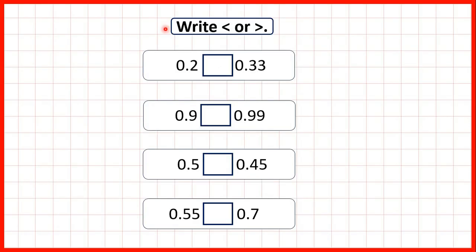In these questions we need to compare decimals which have a different number of decimal places. So first we have 0.2 and 0.33.